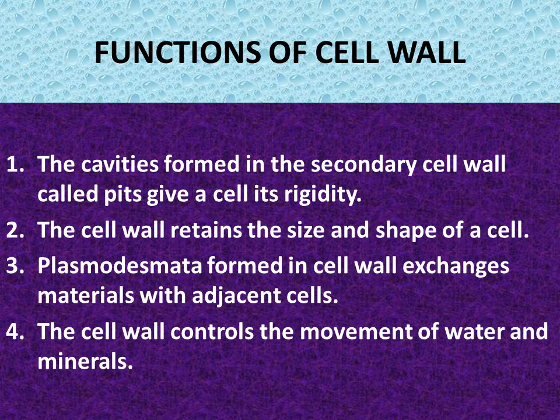Functions of cell wall: Number one, the cavities formed in the secondary cell wall called pits give a cell its rigidity. Number two, the cell wall retains the size and shape of a cell. Number three, plasmodesmata formed in the cell wall exchange materials with adjacent cells. Number four, the cell wall controls the movement of water and minerals.